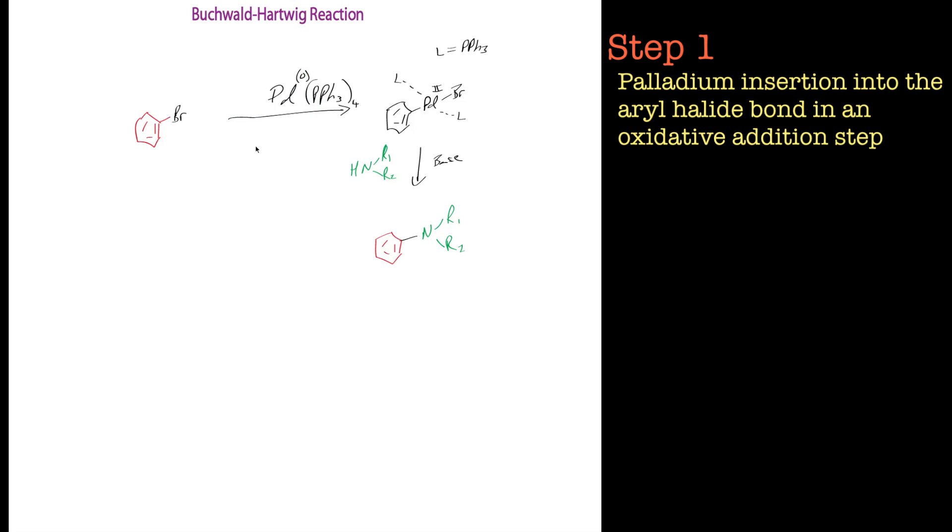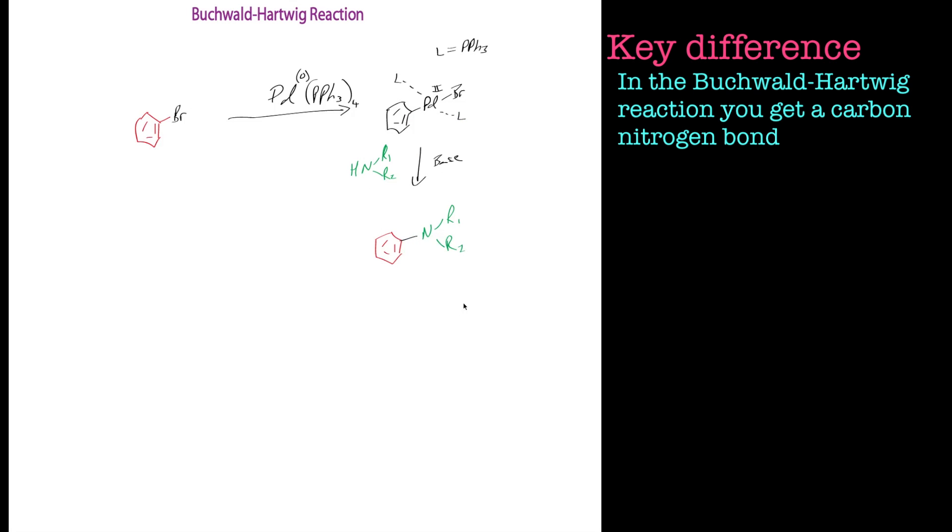Hi, in this tutorial we're going to look at the Buchwald-Hartwig reaction. If I bring the reaction scheme up here, it's a way of looking at an aryl halide reacting it with palladium, palladium zero in this case, and getting oxidative addition as we do with most organometallic reactions. But the difference here is rather than just getting a carbon-carbon bond, we end up with a carbon-nitrogen bond, which is really useful, and it gets us into these aniline type molecules.